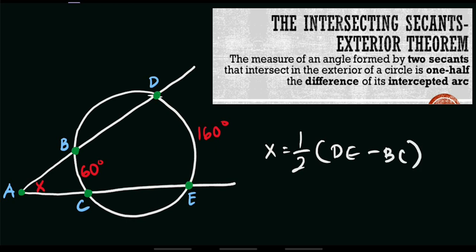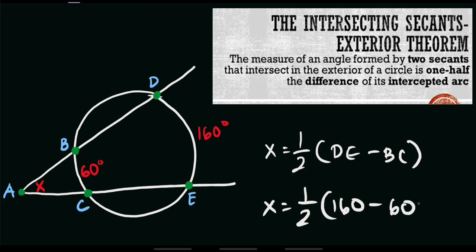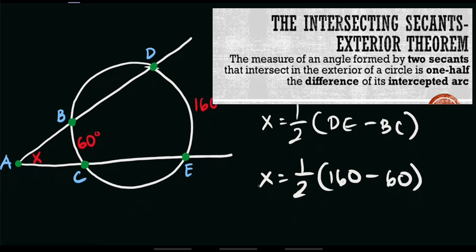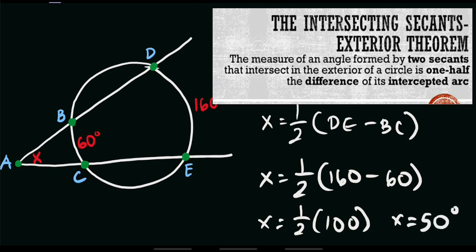Let's substitute the values. The value of x is simply equal to one half of DE, which is 160 degrees, minus BC, which is 60 degrees. So just simplify: x equals half of 160 minus 60, that is 100. One half times 100 — therefore, the value of x is equal to 50 degrees. And that's our final answer.